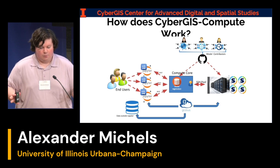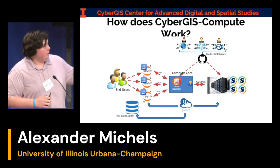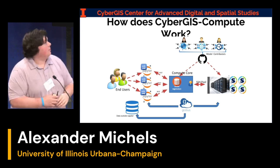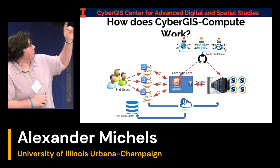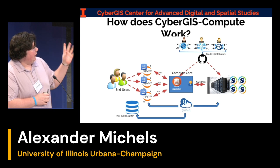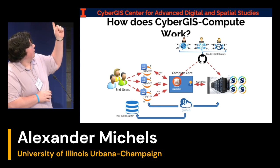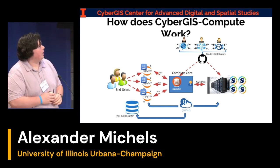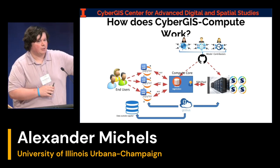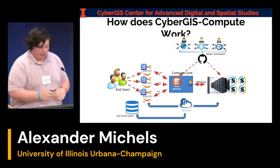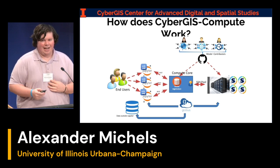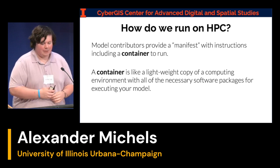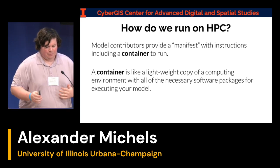At a very high level, end users access everything through a Jupyter Hub interface. Model developers just submit things to GitHub, and a core server pulls the code from GitHub when a user tries to run a model, then talks to the HPC and tells it how to run it. Model contributors define a manifest with instructions on how to do that, which includes a container.